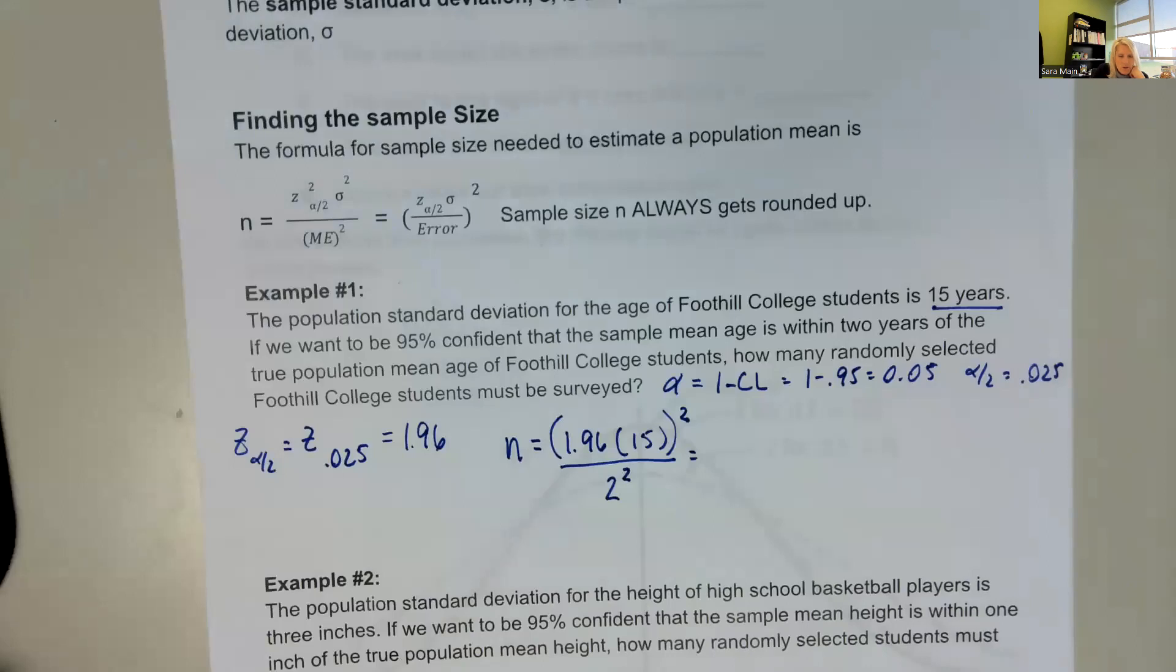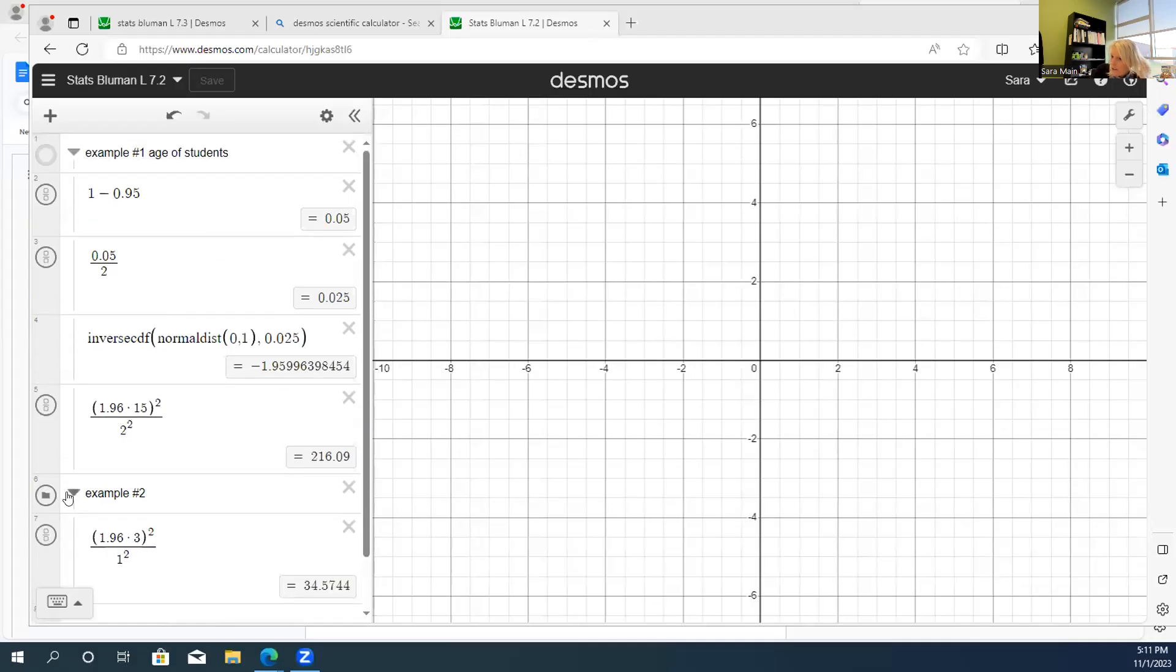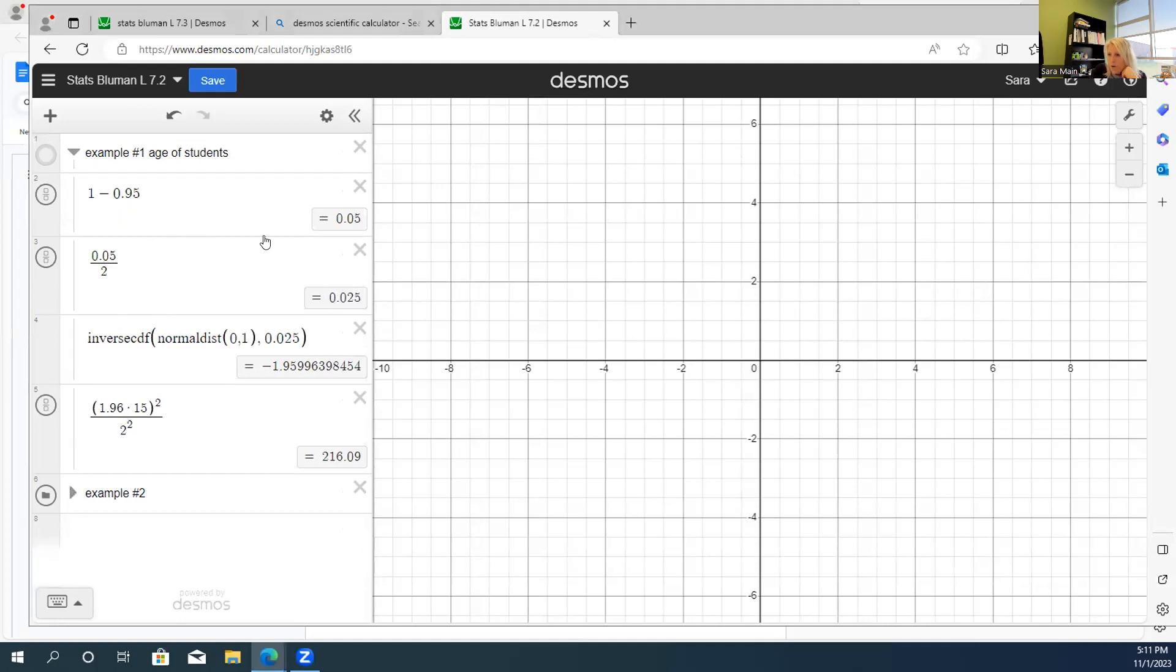So let me take you to my Desmos screen here. And you can see that we figured out our alpha. We took alpha divided by 2. And then I'm using the inverse CDF of the normal distribution of that 0.025. And I could do 1 minus 0.025. They're symmetric. So you could ignore the negative. It's just the 1.96 is what we're going to round that to.